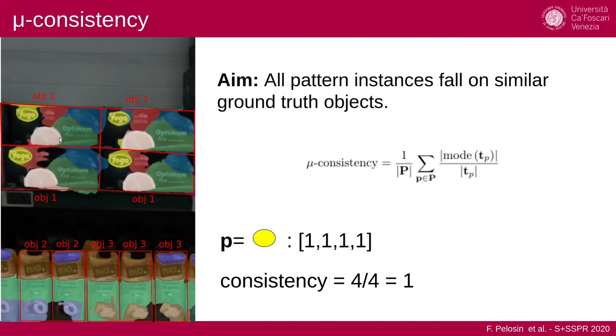For example, here the yellow pattern falls on this yoga label here, and it falls on object one four times. So the mu-consistency is computed as this: we take the mode of the object ID, which is one, and the cardinality of the mode is four, divided by the number of instances found, which is four. So we have complete consistency.